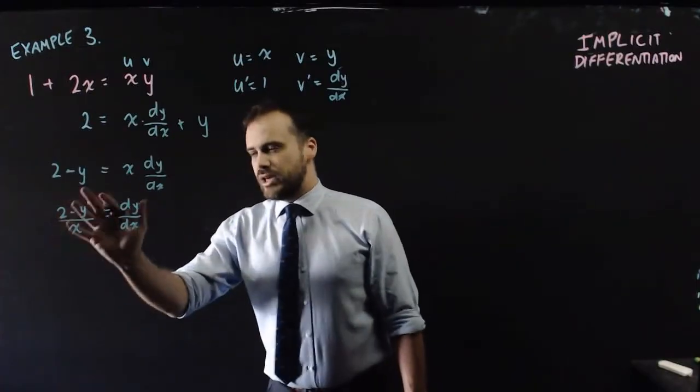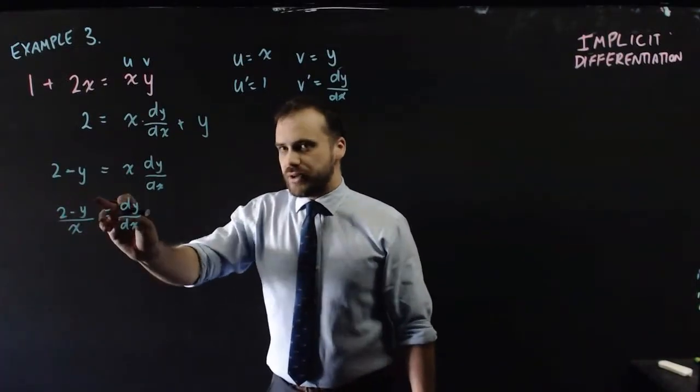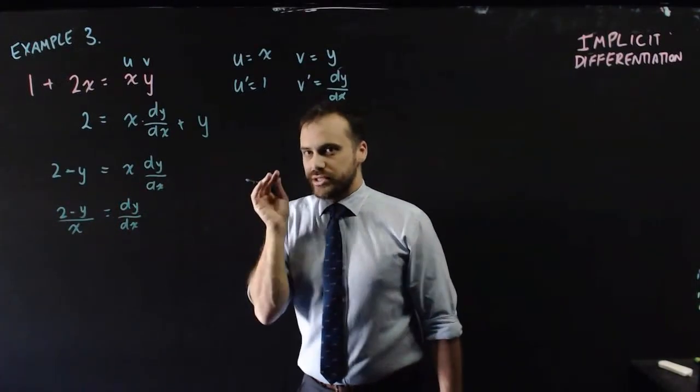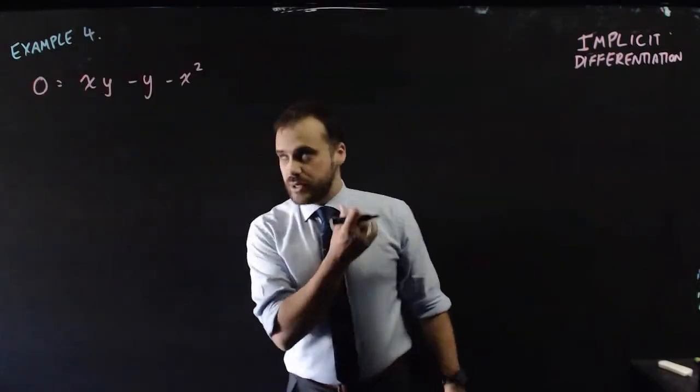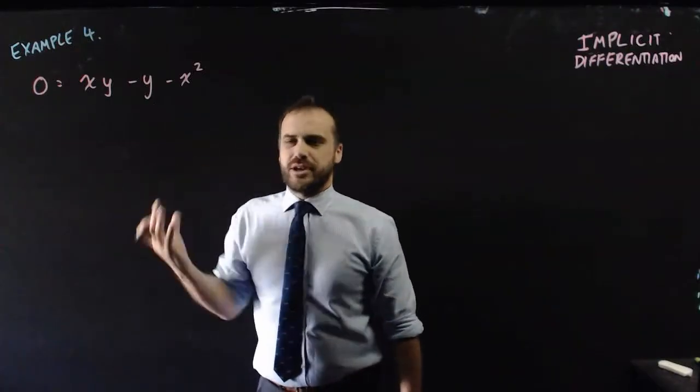And then dy/dx equals (2 minus y) over x. There's our derivative. If you put an x value and a y value in there, you'll know the slope or the gradient at that point.